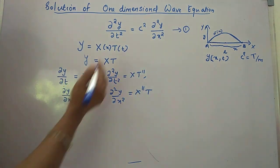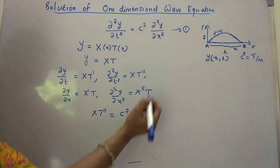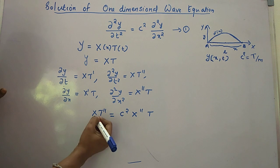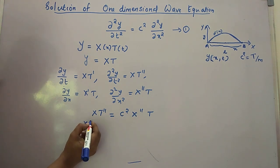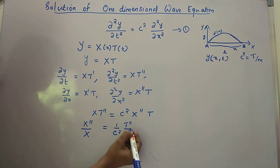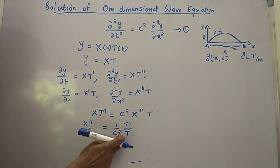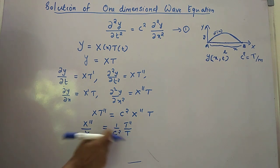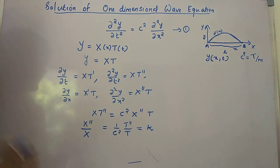Substituting these values into equation 1, we get X·T'' = c²·X''·T. Rearranging, we can see that one side includes only functions of x alone and the other includes only functions of t. This is possible only if both sides are equal to a constant.